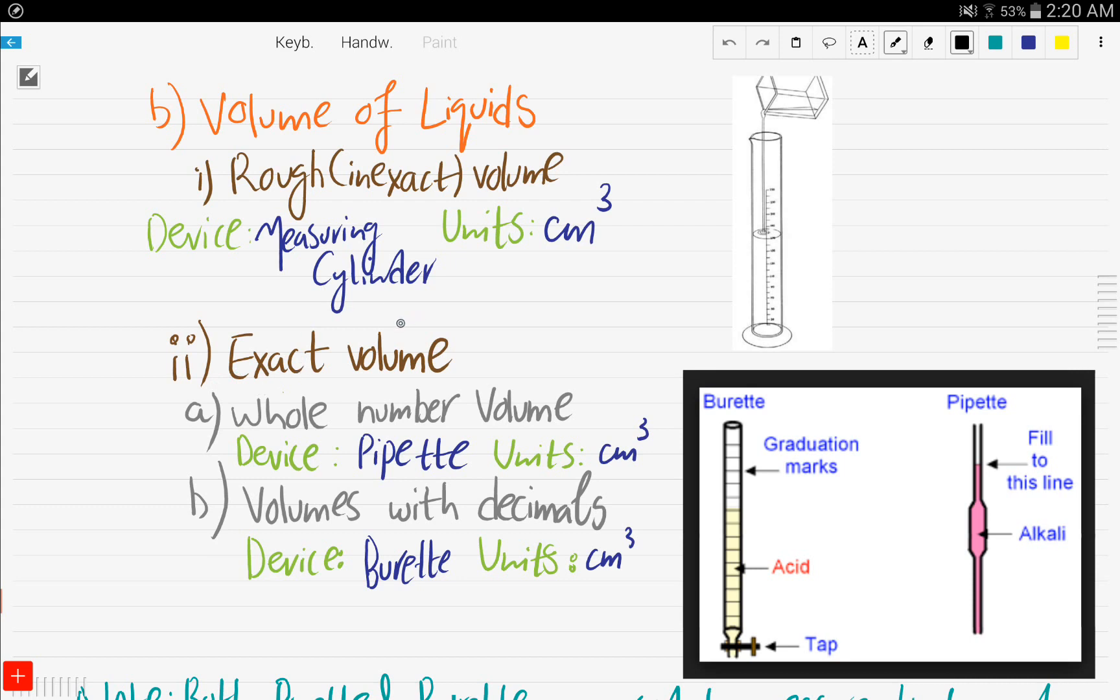The second thing, if you want to measure an exact volume. Also, there are two scenarios. Do you want a whole number volume or a volume with decimals? If you want a whole number volume, then use a pipette. If you want a volume with decimals, use a burette. That means it's more accurate because it gives you the volume in decimals and the unit is centimeter cube.